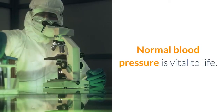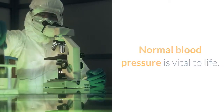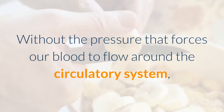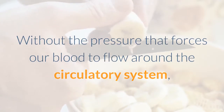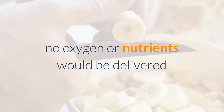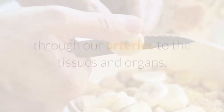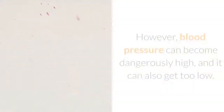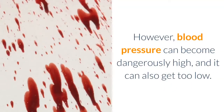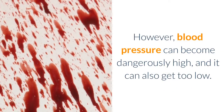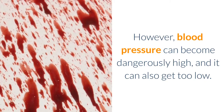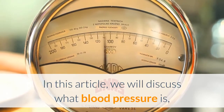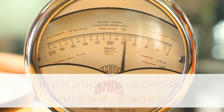Normal blood pressure is vital to life. Without the pressure that forces our blood to flow around the circulatory system, no oxygen or nutrients would be delivered through our arteries to the tissues and organs. However, blood pressure can become dangerously high, and it can also get too low. In this article, we will discuss what blood pressure is, how it is measured, and what the measurements mean for our health.